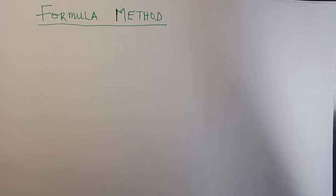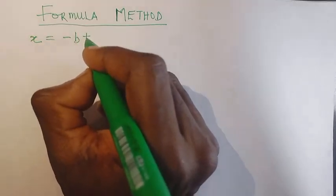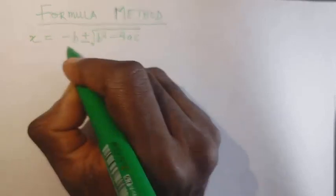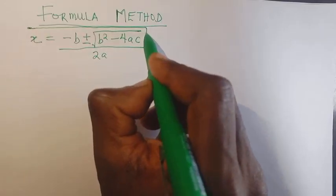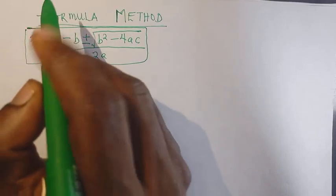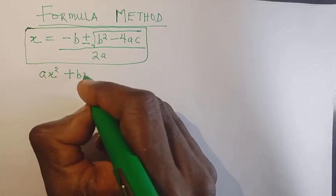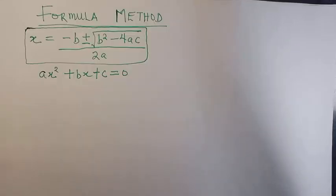Today we're going to be looking at the formula method of solving quadratic equations. The formula method is x equals to minus b plus or minus root b squared minus 4ac, all over 2a. This is what we call the formula method, and it is derived from solving the general representation of a quadratic equation.